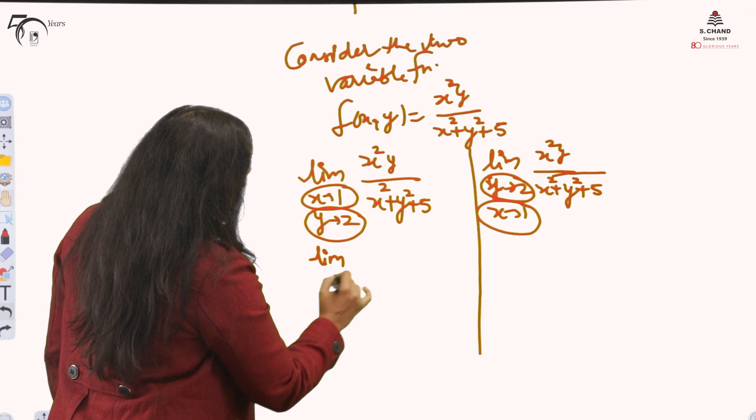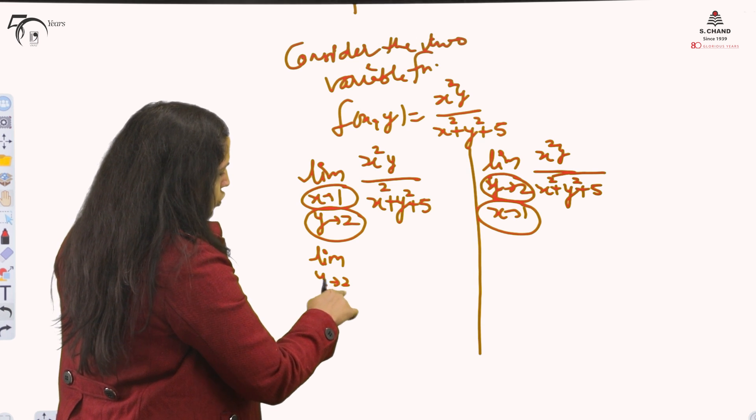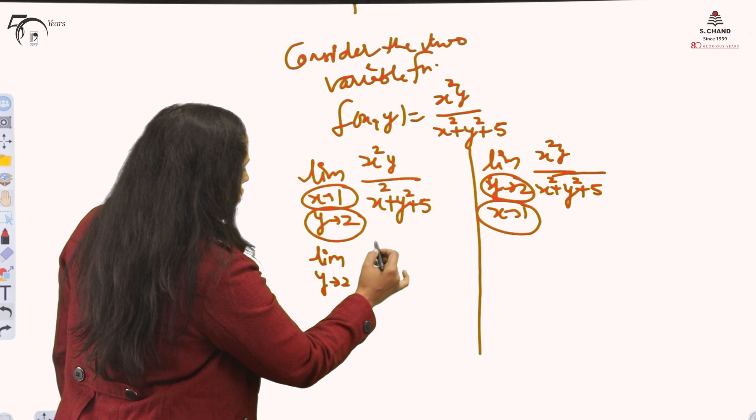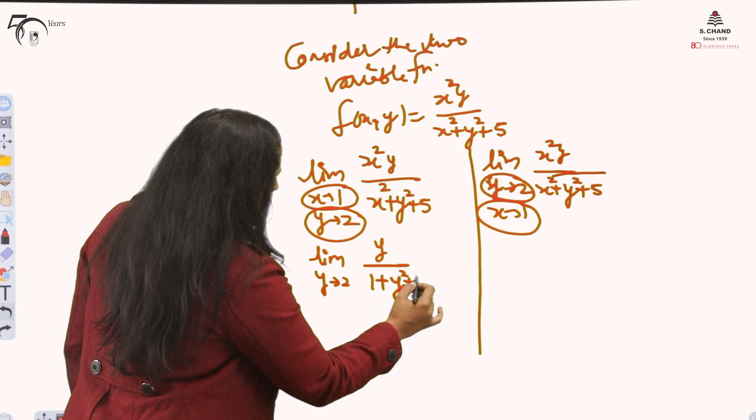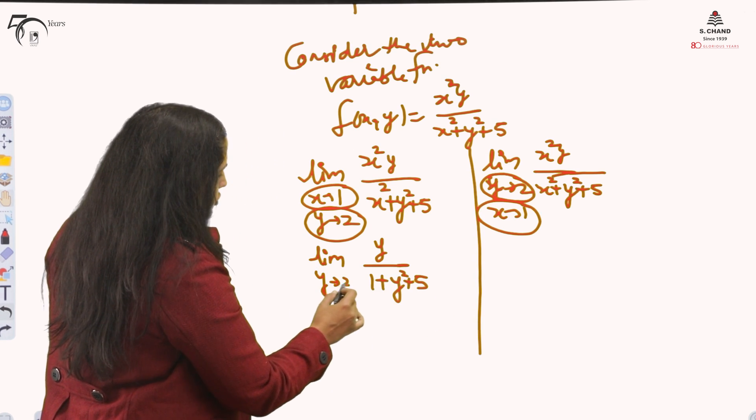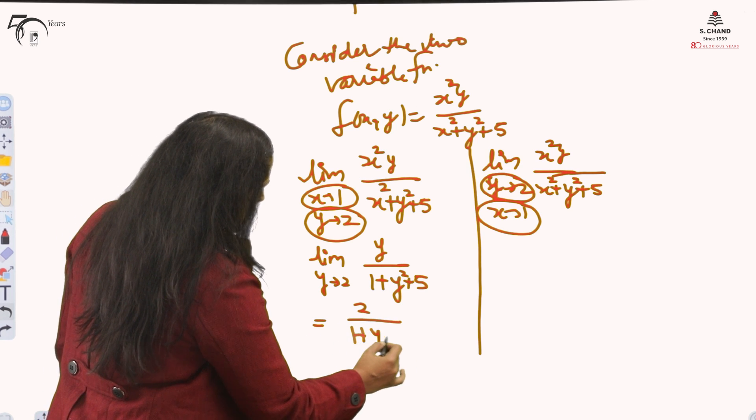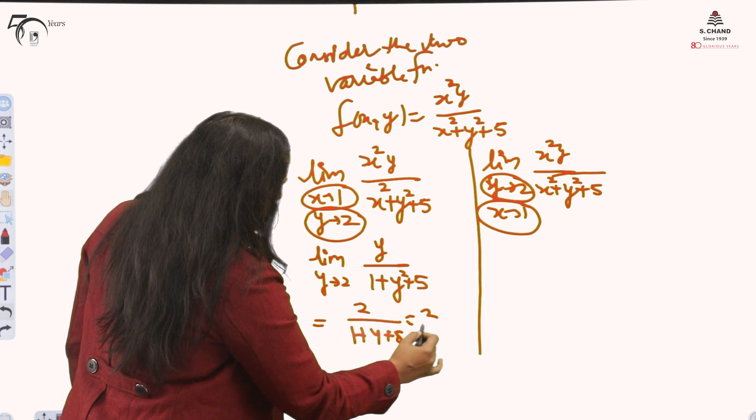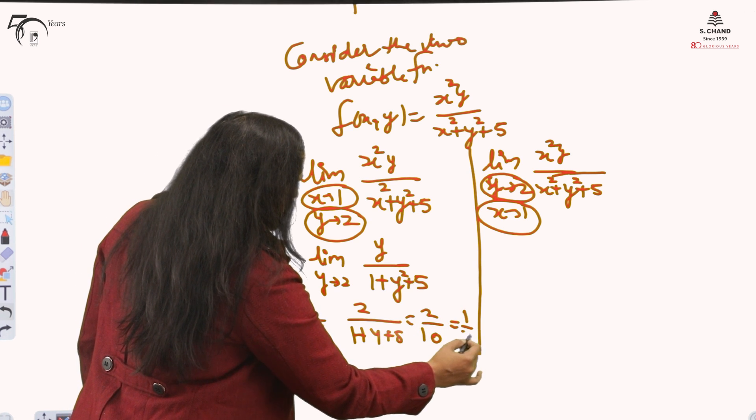x=1 I am substituting first. It means y is still pending. I am writing limit y tending to 2 is still pending. x I am substituting, my result is this. x I have substituted. Then I will substitute 2. My final result will be 1 + 4 + 5, so 2/10. That is 1/5.